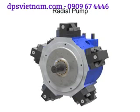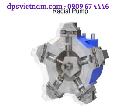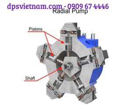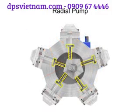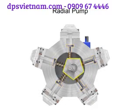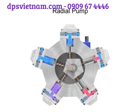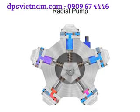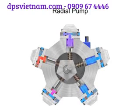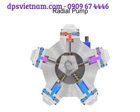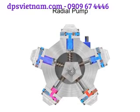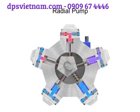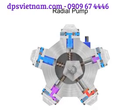Radial pumps are designed so the pistons stroke in a direction at right angles to the shaft. The pistons are arranged like wheel spokes around a cylinder block with an eccentric central cam mounted on a drive shaft. As the shaft rotates, the cam moves towards the pistons, forcing them down into the cylinder block and discharging the fluid. As the cam moves away, springs help retract the piston and cause the intake stroke. Check valves ensure that fluid only enters the inlet ports and only exits the outlet ports.